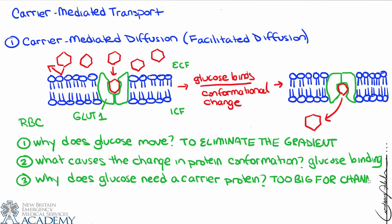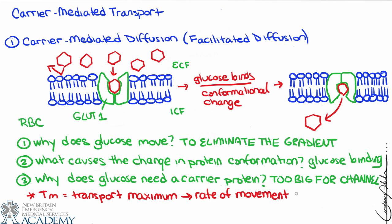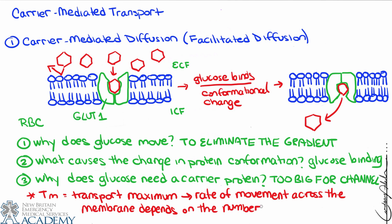While talking about carrier-mediated diffusion, I want to mention something called the transport maximum, or TM. Basically, the rate of movement across the membrane depends on the number of carrier proteins. Glucose can move across at a specific rate, but at some point there's so much glucose and not enough transporters to keep up with the demand. Some glucose molecules will essentially be waiting in line for a transporter because there aren't any available — that's considered rate-limiting. The rate of transport is limited by the number of transporters in the membrane.